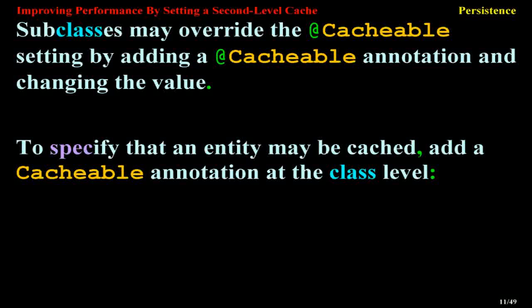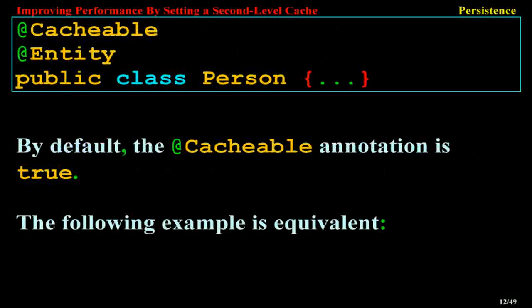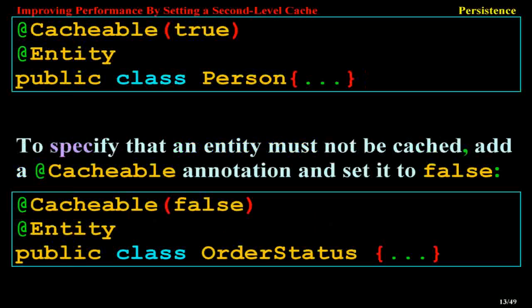To specify that an entity may be cached, add a @Cacheable annotation at the class level: @Cacheable @Entity public class Person. By default, the Cacheable annotation is true. The following example is equivalent: @Cacheable(true) @Entity public class Person.